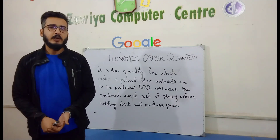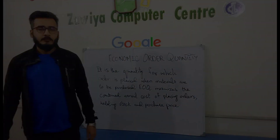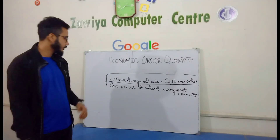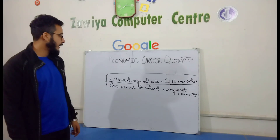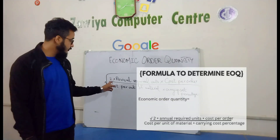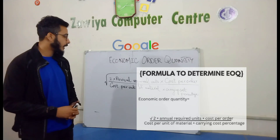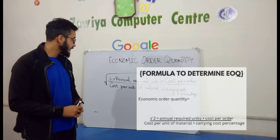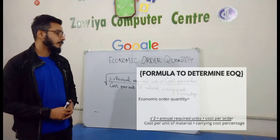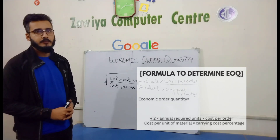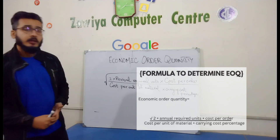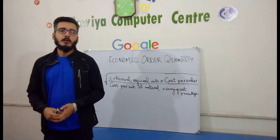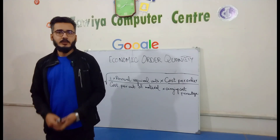The formula to calculate EOQ — Economic Order Quantity — is: multiply 2 by annual required units, multiply by cost per order, then divide by cost per unit of material multiplied by carrying cost percentage. Let us now see how to calculate Economic Order Quantity by solving a question.